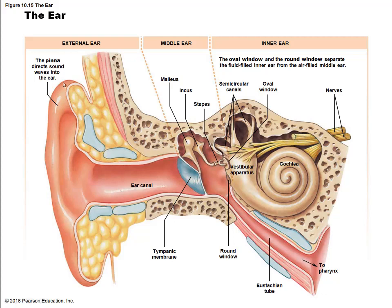Starting from the beginning: the pinna captures sound waves as they travel through the air and conducts them through the external ear canal towards the tympanic membrane. Conductive hearing loss can include obstruction of the external ear canal, which would prevent sound vibrations from traveling through this area. As the sound waves hit the tympanic membrane, they cause it to vibrate.